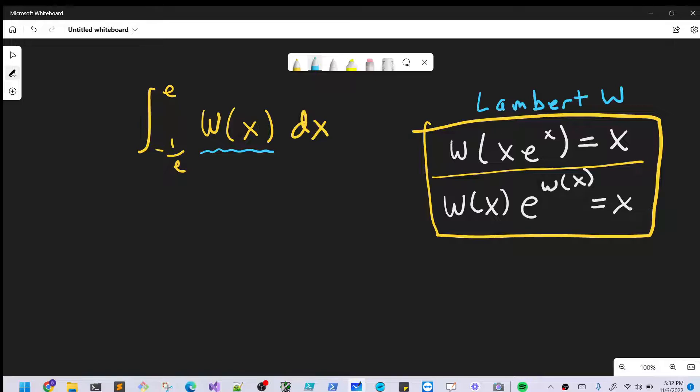But I think what I want to do is try a u-substitution. I think this is going to work out nice. So I'm just going to make my u equal W(x). What that's going to allow me to do is I can kind of use this formula in reverse.